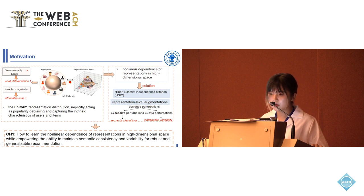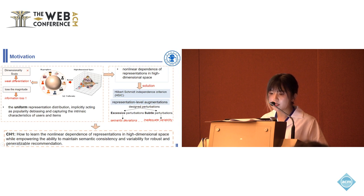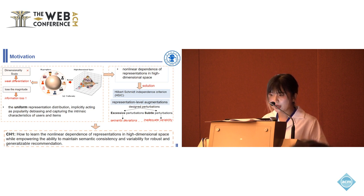Both independence criteria provide a solution to capture nonlinear dependence of representations in high-dimensional space. However, existing representation-level augmentation heavily relies on designed perturbations. Excessive perturbations may cause semantic deviations, while subtle perturbations may cause inadequate variability of augmented representations. So, the first challenge is how to learn the non-independence of representations in high-dimensional spaces while maintaining semantic consistency and variability for robust and generalizable recommendations.